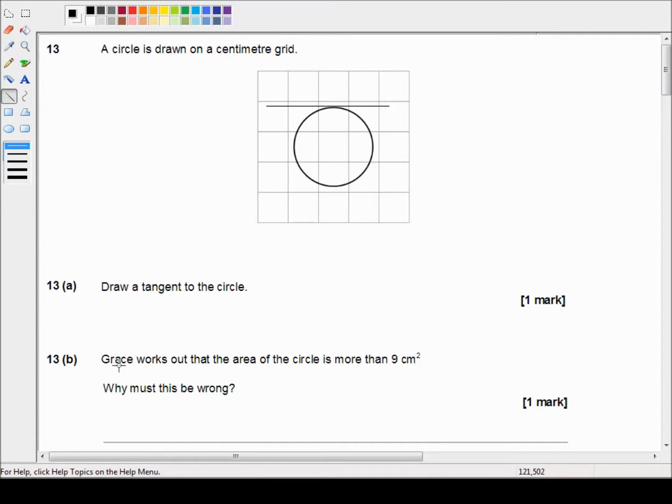Okay, so part 13B says Grace works out that the area of the circle is more than nine centimeters squared. Why must this be wrong? Well, I'm assuming that each one of these are one centimeter by one centimeter squares, which you can easily check with your ruler.